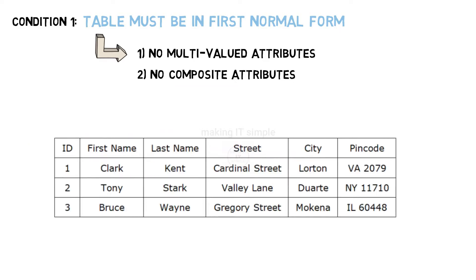So let us take one last example. This table is in 1NF, as it has no composite and no multivalued attributes present in it. So hope you understood the first condition for the table to be in second normal form.